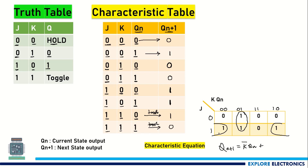So it is K̄·Qn for this group, plus for the corner-to-one values group, J is present and the 00 and 10 columns mean K cancels out, leaving Q̄n. So Q̄n because of 0. Therefore, the characteristic equation for JK flip-flop is: Qn+1 = K̄·Qn + J·Q̄n.